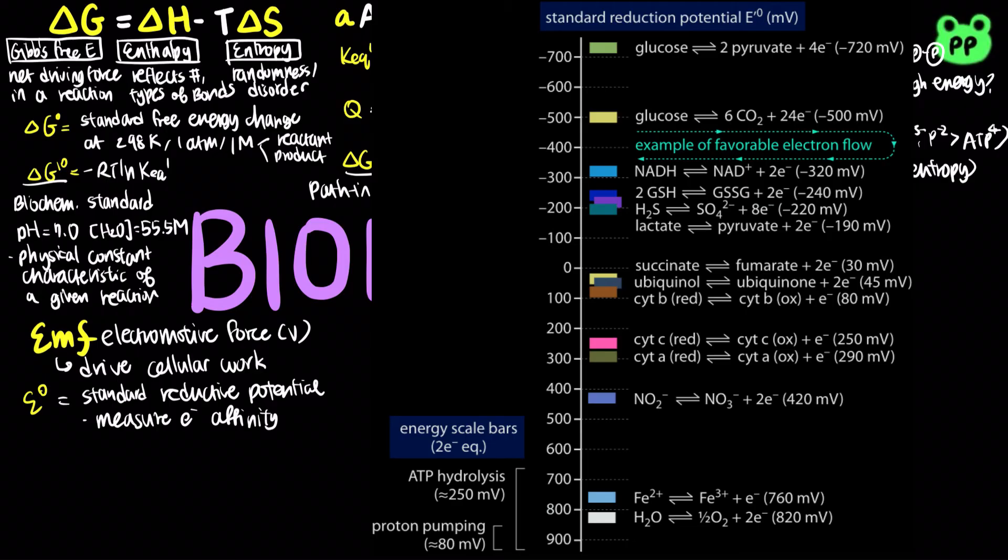By the equation, the change in free energy equals negative NF times the change in reductive potential. N is the number of electrons transferred in the reaction, and F is the Faraday's constant.